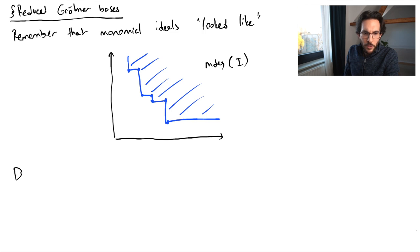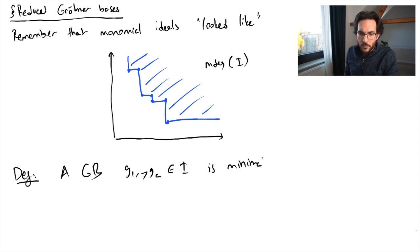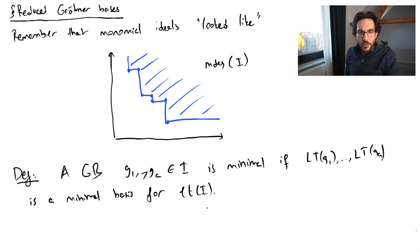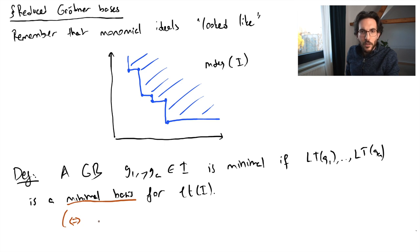We're going to do the same thing for a Grübner basis. A Grübner basis g_1 through g_a is minimal if the leading terms — or the leading monomials — form a minimal basis for the ideal of leading terms. Since we started with a Grübner basis, we know these leading terms generate the ideal of leading terms, and the minimality condition is: the leading terms do not divide one another.